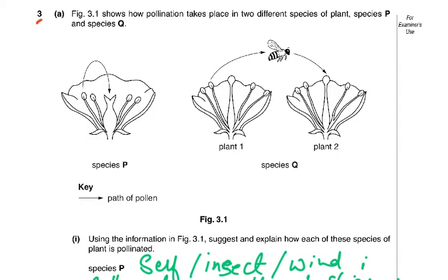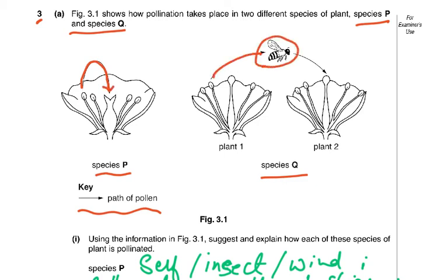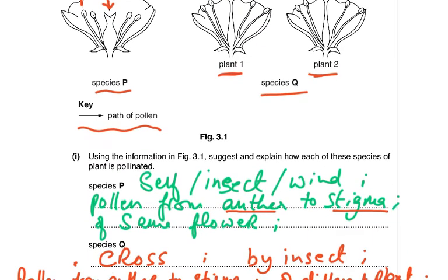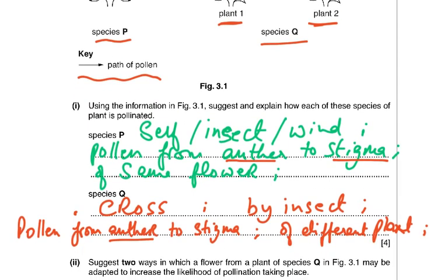Question 3. Figure 3.1 shows how pollination takes place in two different species of plants, species P and species Q. In species P, pollen travels from the anther to the stigma of the same flower. In species Q, an insect is involved and pollen goes to the stigma of another flower. Remember: these must be the same species — you can't have pollen from a rose fertilizing a lily.